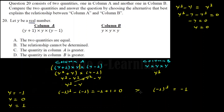At this point, when Y equals zero: Column A gives zero cubed minus zero, which equals zero. Column B gives zero cubed, which equals zero. So zero equals zero — the quantities are equal here. When Y equals 1: Column A gives 1 cubed minus 1, which equals zero. Column B gives 1 cubed, which equals 1. So zero is compared to 1 — they are not equal; Column B is greater.